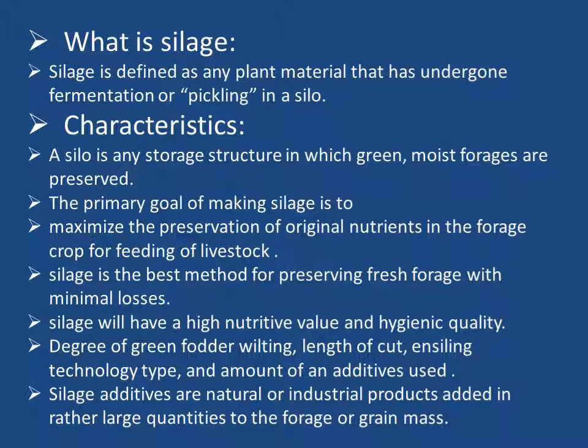What is silage? Silage is defined as any plant material that has undergone fermentation or pickling in a silo — any storage structure in which green, moist forages are preserved. The primary goal of making silage is to maximize the preservation of original nutrients in the forage crop for feeding of livestock. Silage is the best method for preserving fresh forage with minimum losses.